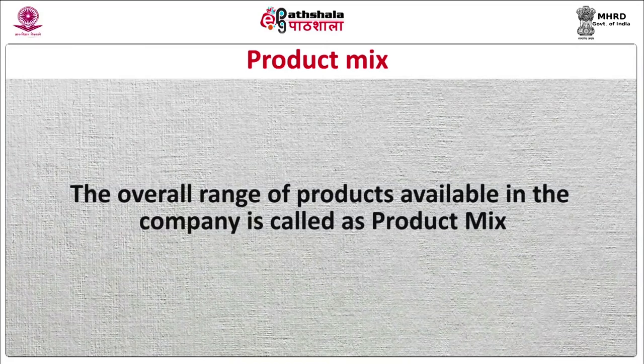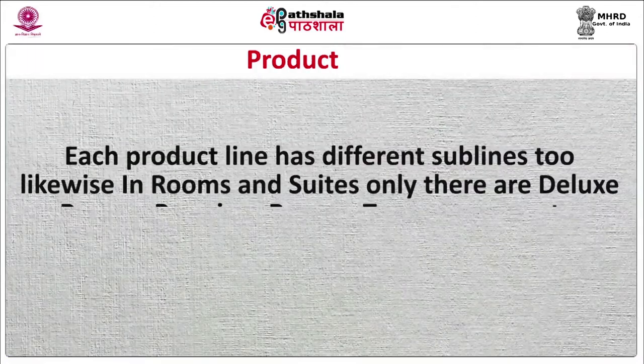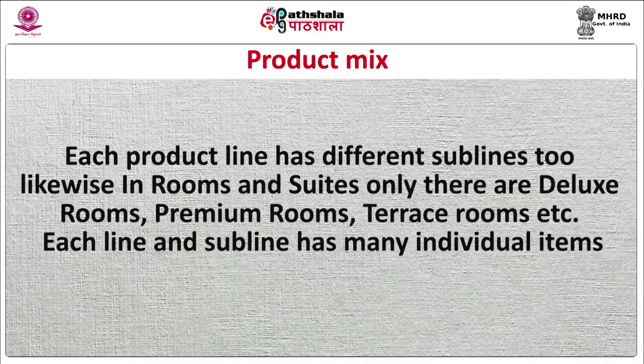The overall range of products available in the company is called the service mix. In cut-throat competition, service providers offer different kinds of offerings so that they can target customers accordingly. For example, the Marriott chain of hotels has about 41 hotels in India, providing different services like rooms and suites, dining, spa, fitness, business conferences, and meetings depending upon the target consumers' needs. Each product line has different sub-lines too.